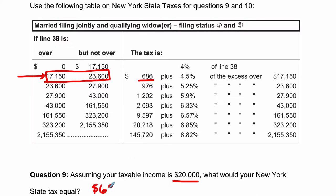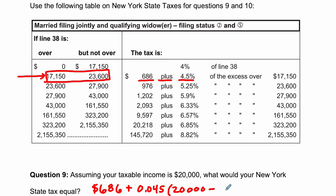So let's write this down: $686 plus 4.5%, that's 0.045, of the excess over — and all these quotation marks just repeat that statement — of the excess over $17,150. So all the money you have above $17,150. In your case, that's your $20,000 taxable income minus $17,150. That tells you how much you have past $17,150. Multiply that by 0.045, add $686, and you have your total New York State tax, assuming all you're dealing with is income tax.